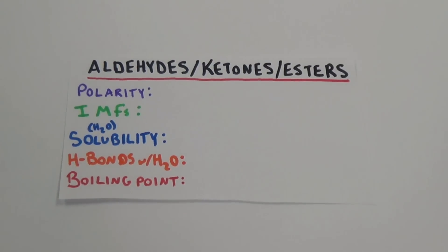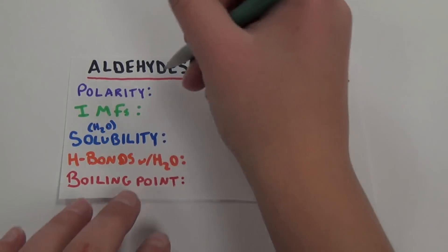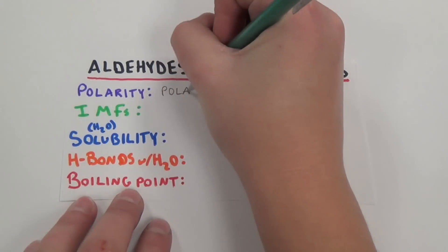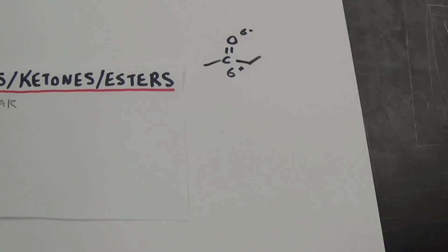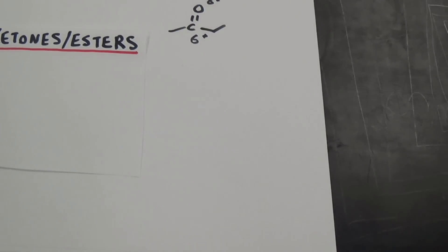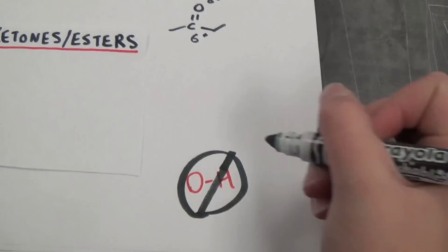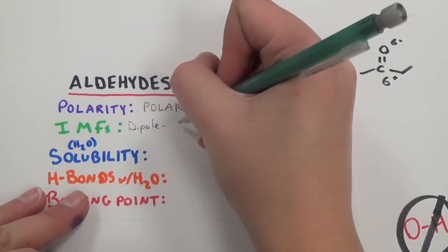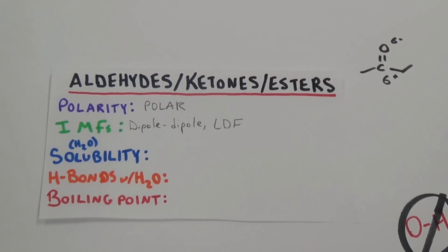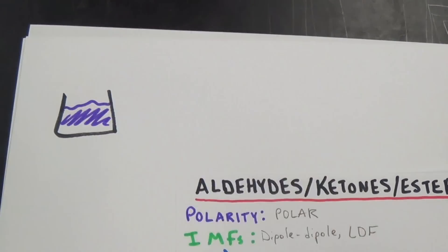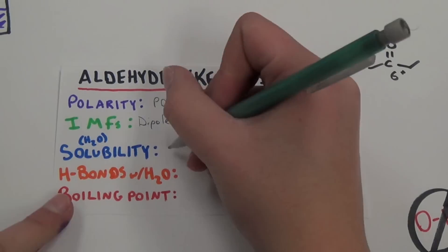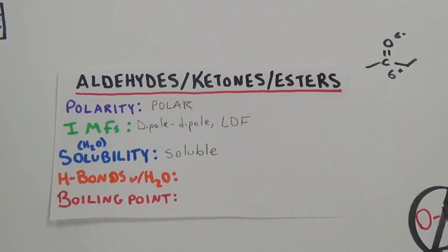Aldehydes, ketones, and esters have all been grouped together on the master list due to their shared properties. All are polar due to the carbon double-bonded to oxygen, and all are unable to form hydrogen bonds with themselves due to the lack of hydrogen-oxygen bonds. These molecules are usually found as liquids. They are all soluble in water and are able to form hydrogen bonds with water.